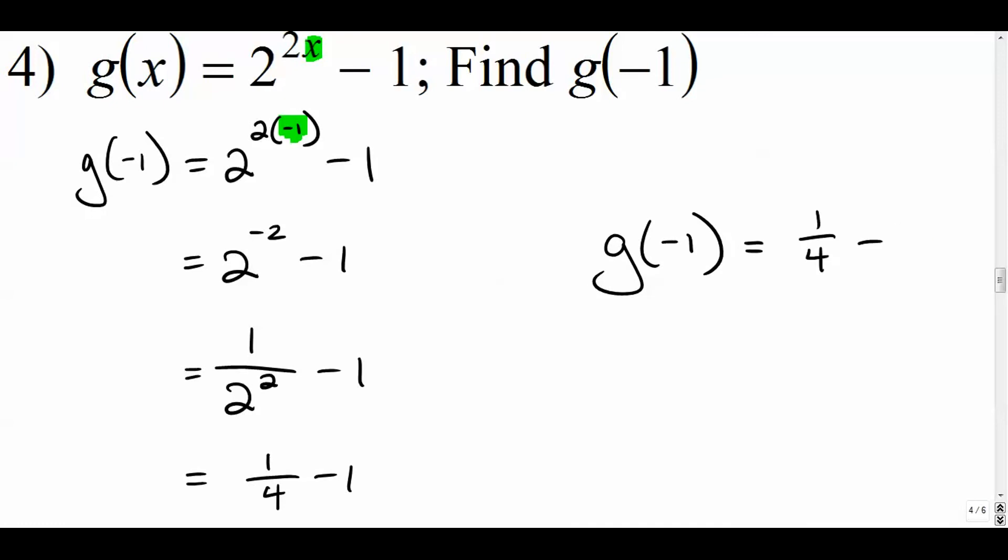So g of negative 1 is 1 fourth, take away 1. Well, let's change 1 into 4 over 4. So we get g of negative 1 is equal to 1 minus 4 over 4, and that's our answer.